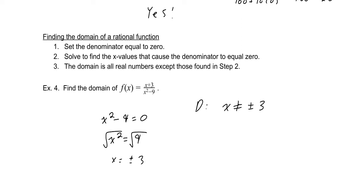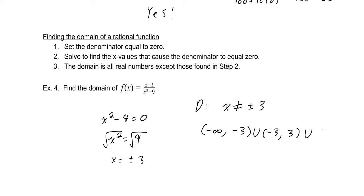The domain is all x not equal to plus or minus 3. Written in interval notation: negative infinity to negative 3, then negative 3 to 3, then 3 to positive infinity, with none of those boundary values included.